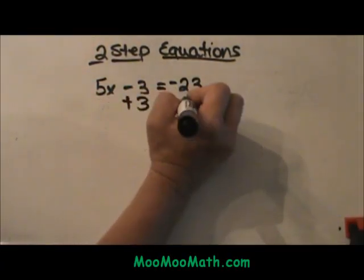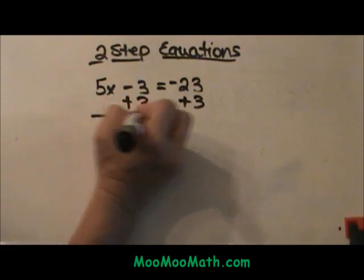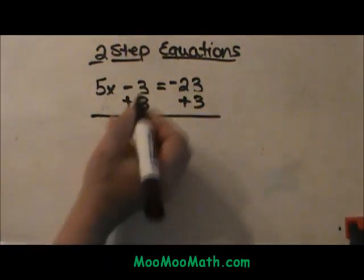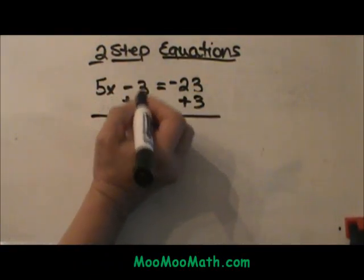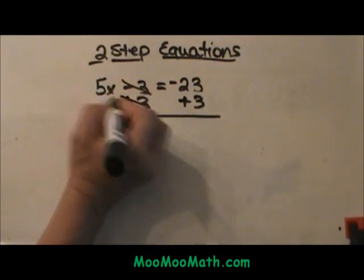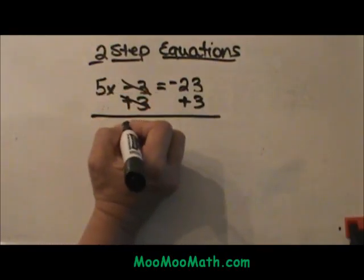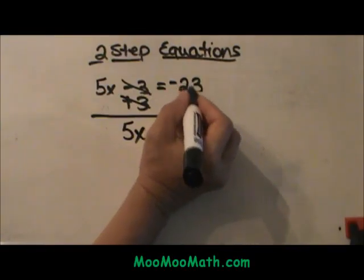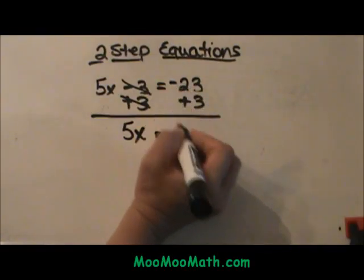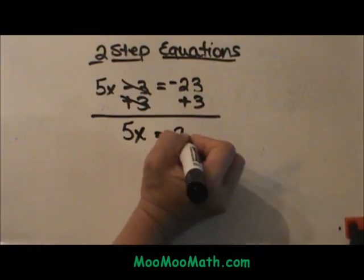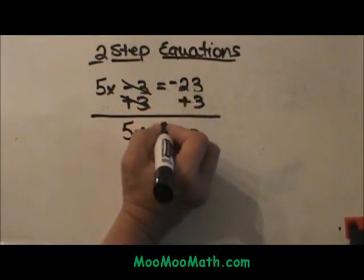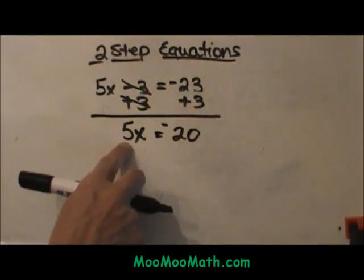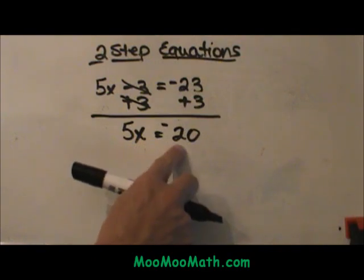So in order to undo minus three, I am going to add three. Add three to both sides. Draw the line and bring it down. So negative three plus three is zero. We have created a zero. So now we have 5x on the left side and negative 23 plus three. Different signs subtract and take the sign of more. We have more negatives, so we have 5x is equal to negative 20.